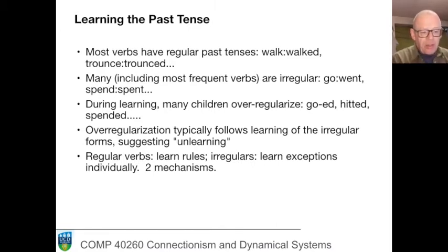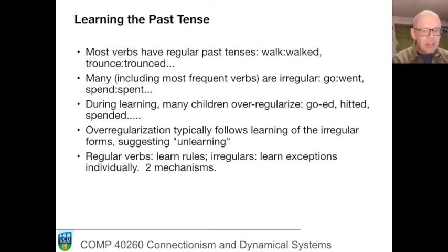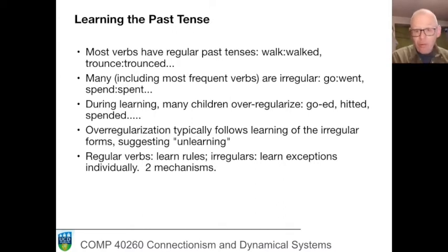Initially the child is treating each verb form as if it was unconnected to everything else. Then at some stage they figure out the rule for making past tense forms and they over-apply it. And then they have to learn the exceptions individually again. This suggests two different kinds of learning: learning individual examples, then the induction of a rule, and then a recognition that one is overdoing it, so individual examples have to be learned again just for the irregular verbs.